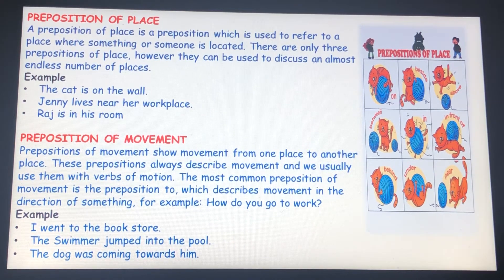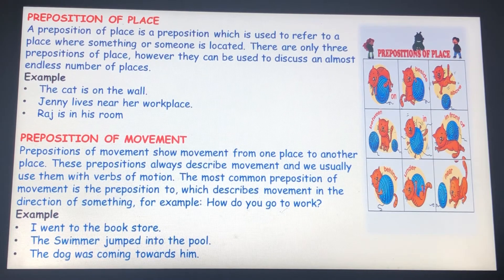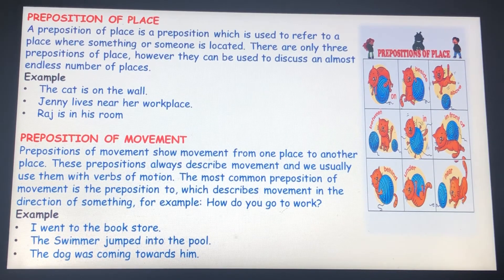The cat is on the wall. 'On' shows at or near a place. Jenny lives near her workplace. Here, 'near' is used to refer to the place. Raj is in his room. 'In' specifies within the shape of something.